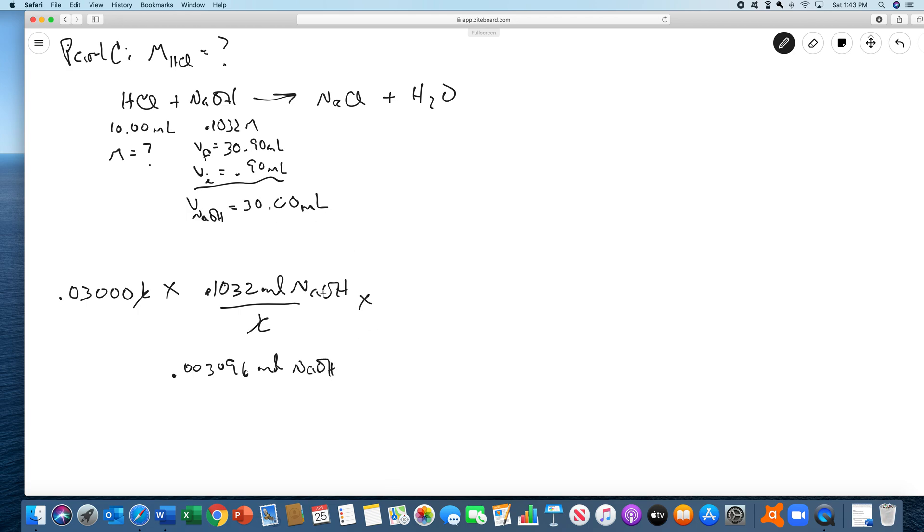All right, the next step is to determine the moles of hydrochloric acid. Well, it reacts one to one, so there's one mole of HCl for every mole of sodium hydroxide from the balanced chemical equation. All right, so that would mean that we have 0.003096 moles of HCl were in that original flask.